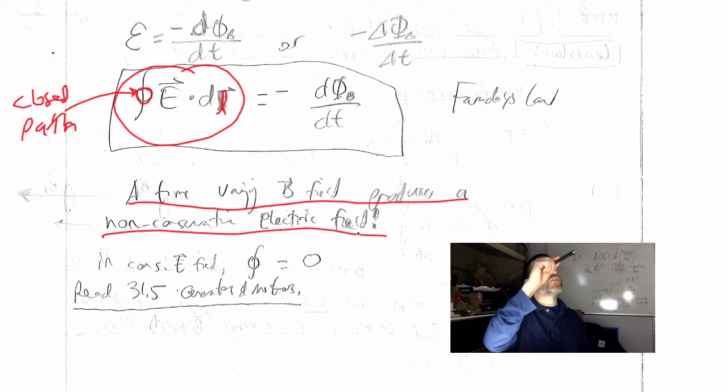Every time a charge goes around the loop, it gains potential energy. So once around, your EMF is basically the potential energy per unit charge for every loop. So you can have a charge keep going around and around, as long as you keep changing the magnetic flux.